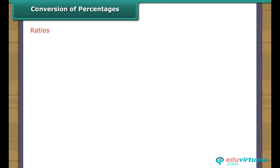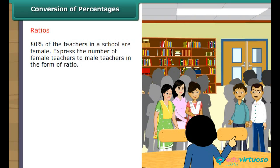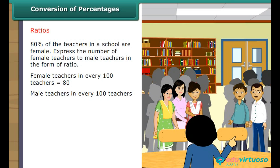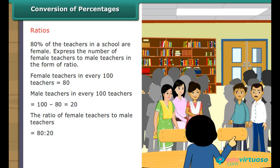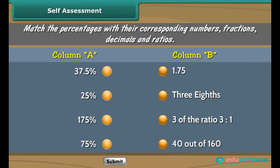Ratios: 80% of the teachers in a school are female. Female teachers in every 100 = 80; male teachers = 100 − 80 = 20. The ratio of female to male teachers is 80:20 = 8:2 = 4:1.